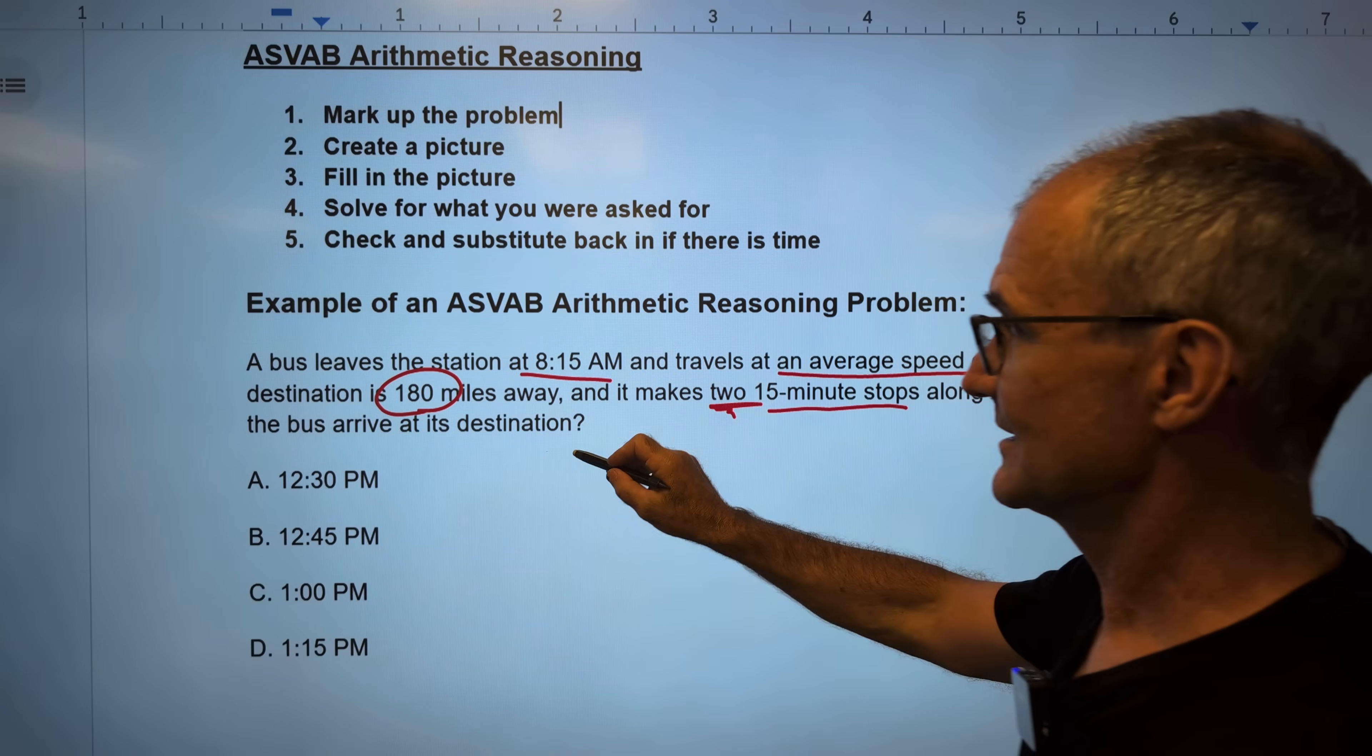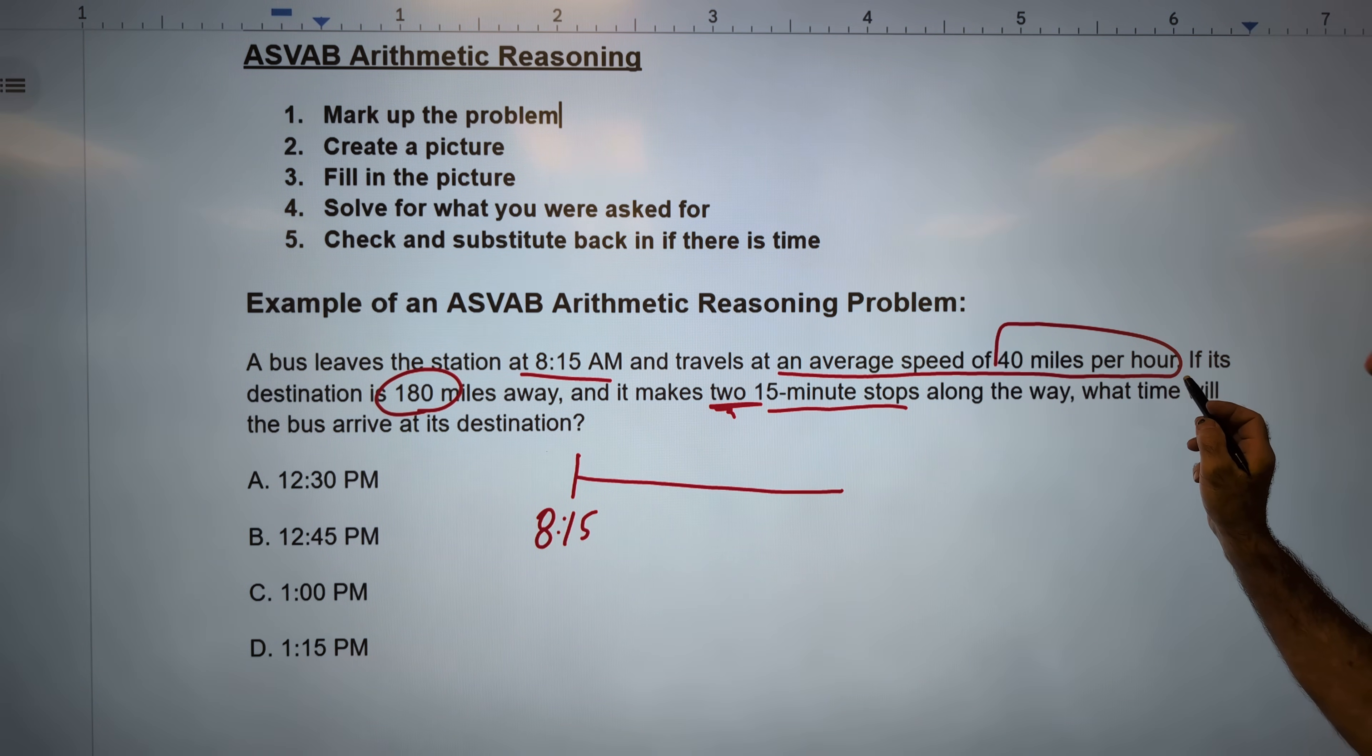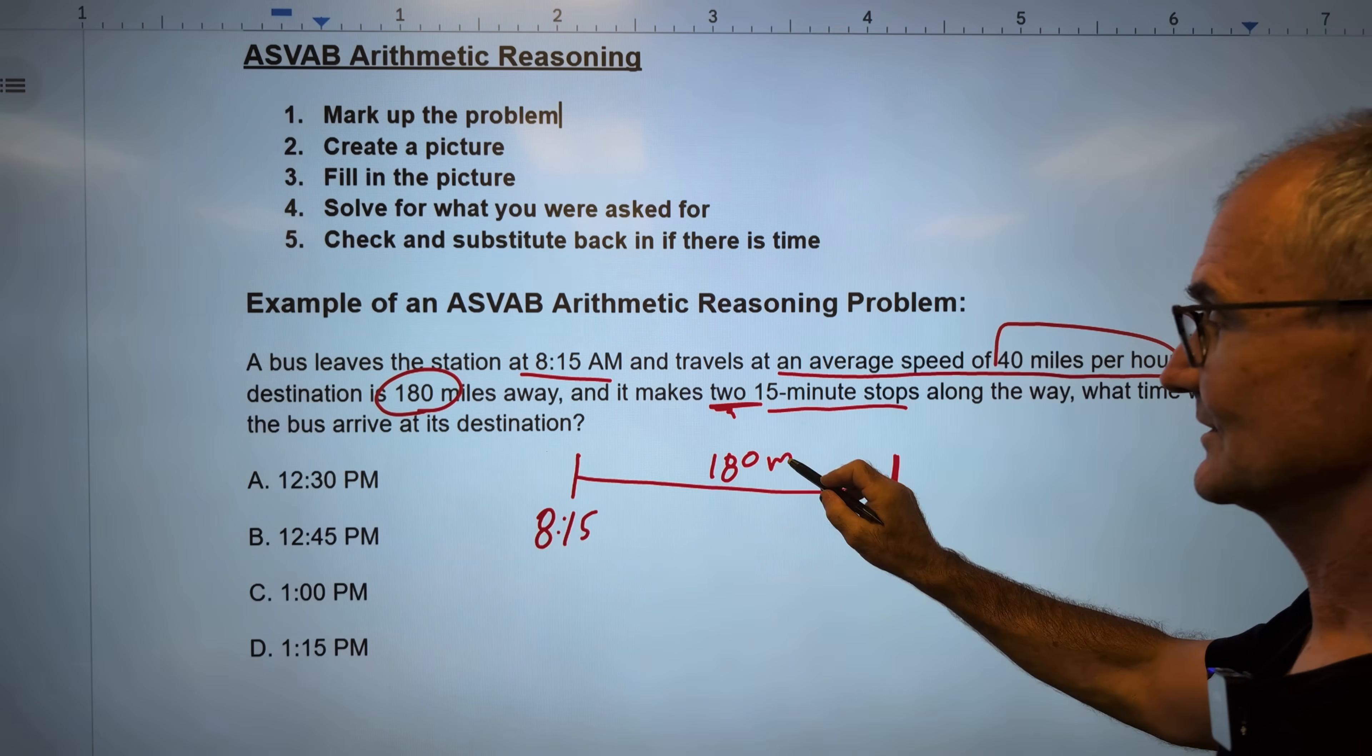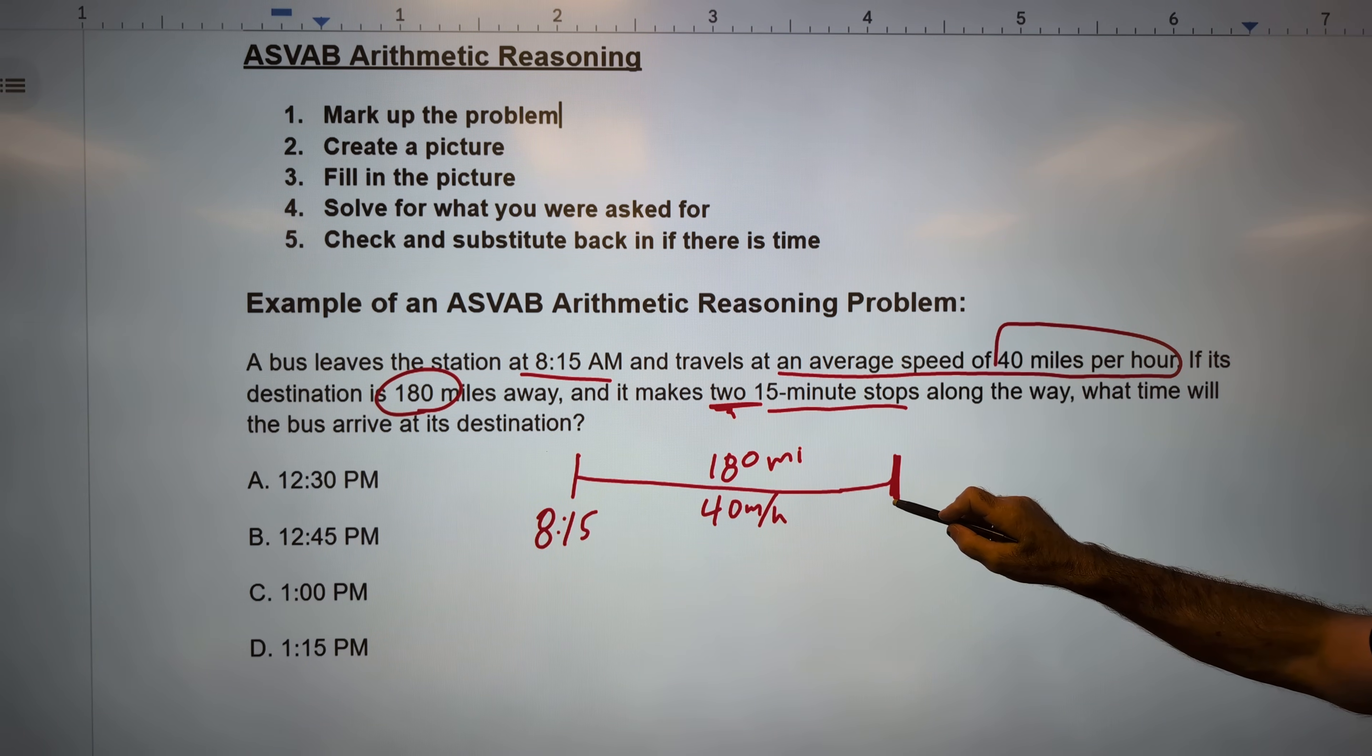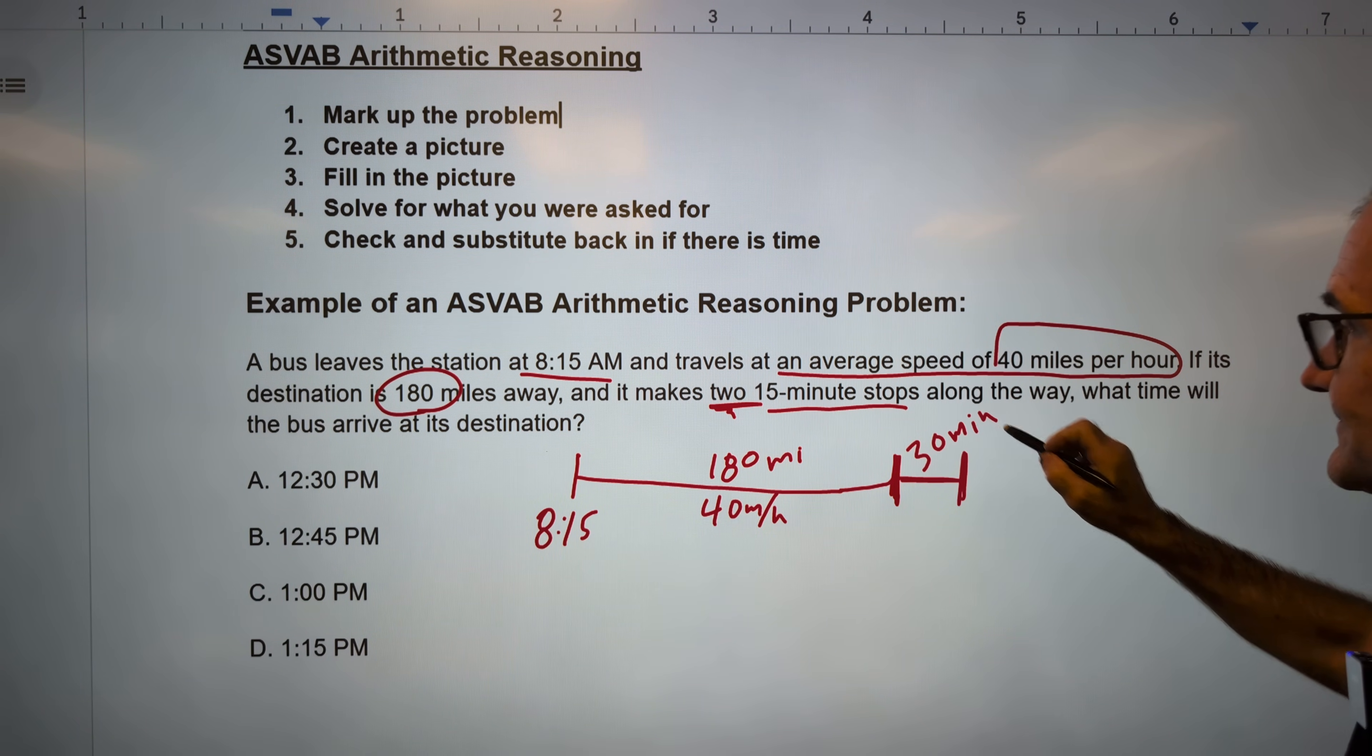So I've marked it up. Step two, let me create a picture. I start right here at 8.15 a.m. So there I am at 8.15. And I travel at a speed of 40 miles per hour. And this is 180 miles away. So I'm going 180 miles at 40 miles per hour. Okay, that's going to put me right here. And it makes two 15-minute stops. So actually I'm going to add those two 15-minute stops right here. Two 15-minute stops. This is going to be 30 minutes along the way.